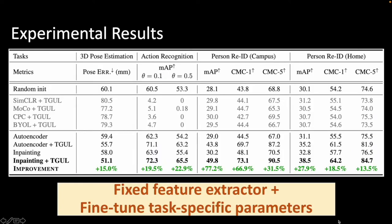We evaluate our unsupervised learning method on multiple RF-based tasks. This table shows the results of the fixed feature extractor setting. The table reveals two findings. First, predictive pretraining using TGUL learns useful unsupervised representations and delivers improvements on all tasks.